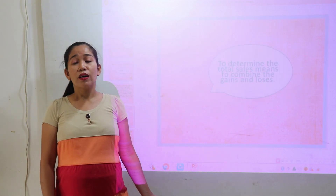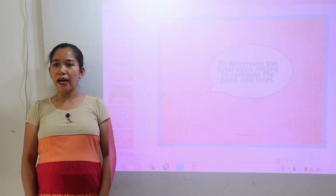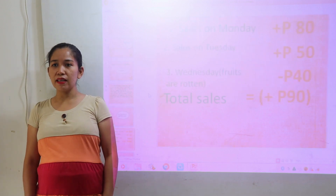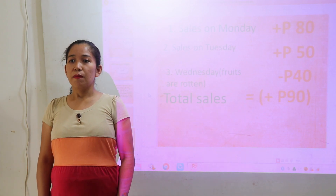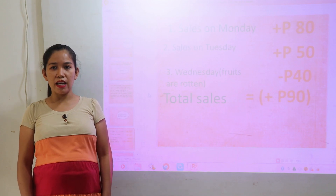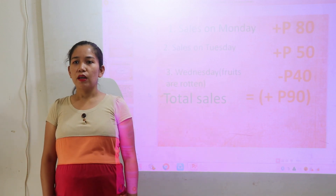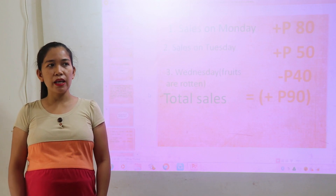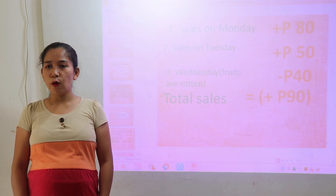What do you think? Class, to determine the total sales means to combine the gains and losses. The sales on Monday is 80 pesos — it will be represented as positive 80 pesos. And on Tuesday, 50 pesos — let us put positive. And on Wednesday, since the fruits are rotten, we will represent it by negative. So, negative 40 pesos.